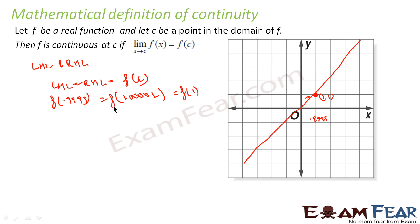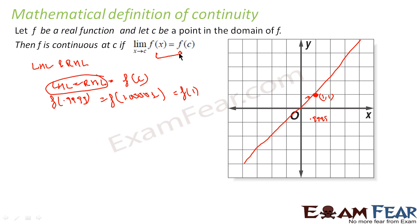If you want to know more about left-hand and right-hand limits, you can watch the video on the Class 11 limits and continuity chapter, where we explain properly how to find them. When I say the limit exists at x = c, that means the left-hand limit equals the right-hand limit, and if that is also equal to f(c), then the function is continuous.